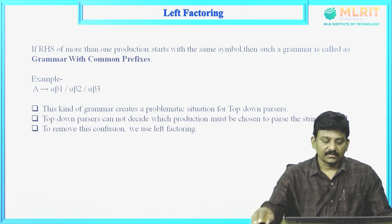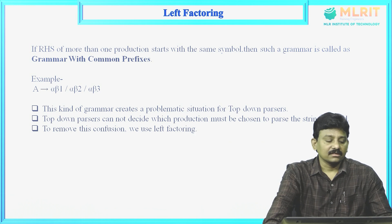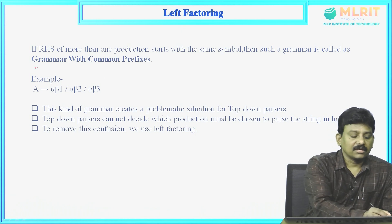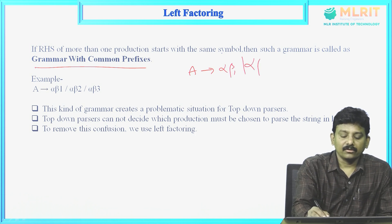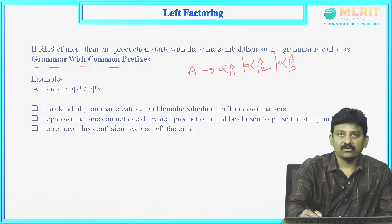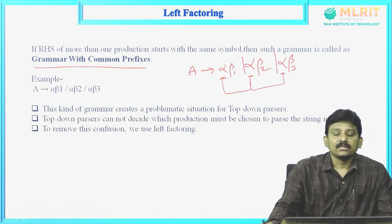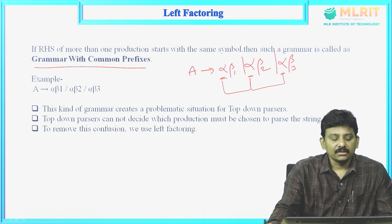What is left factoring? If the RHS of more than one production starts with the same symbol, then such a grammar is called a grammar with common prefixes. For example, A derives alpha-beta1, alpha-beta2, alpha-beta3. In these three rules, the prefixes are the same — alpha, alpha, alpha. So any grammar where the prefixes are the same is called a grammar with common prefixes.